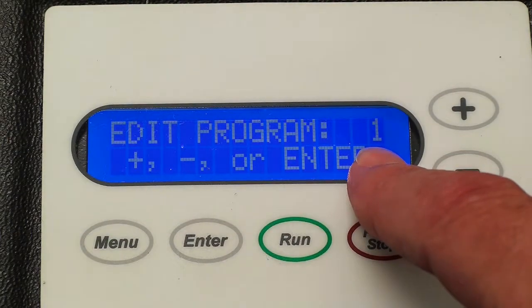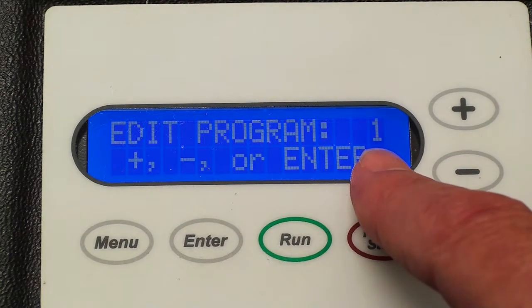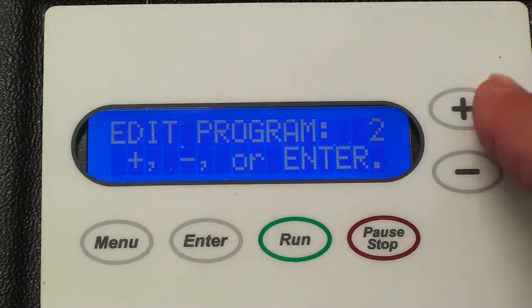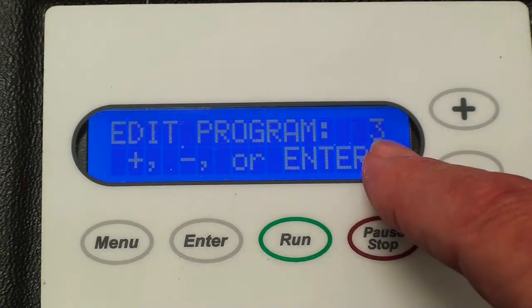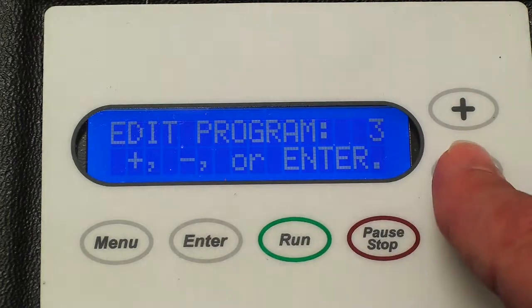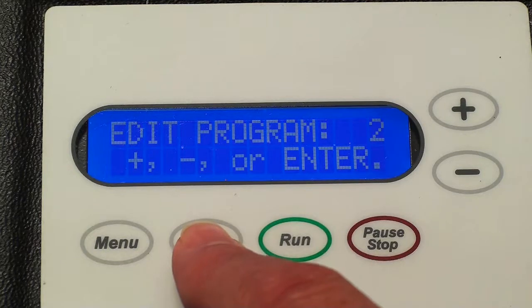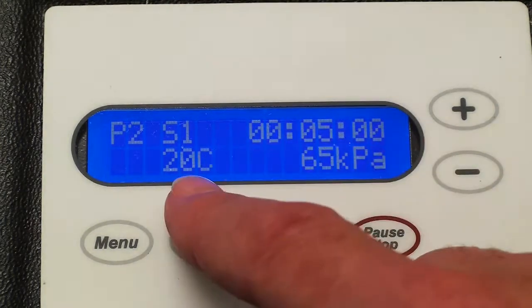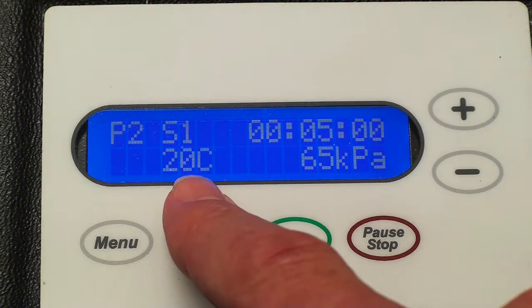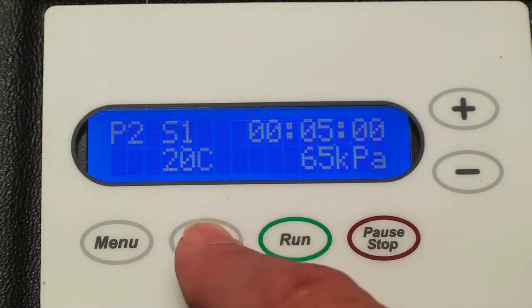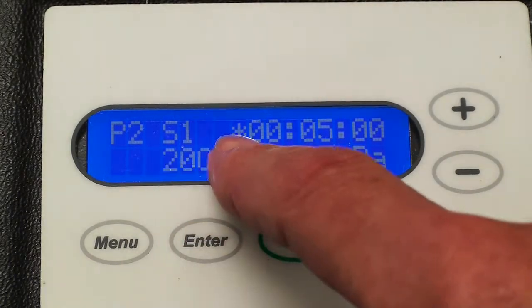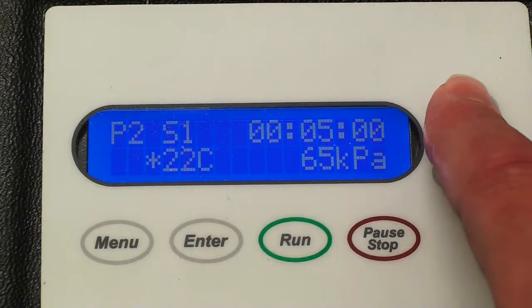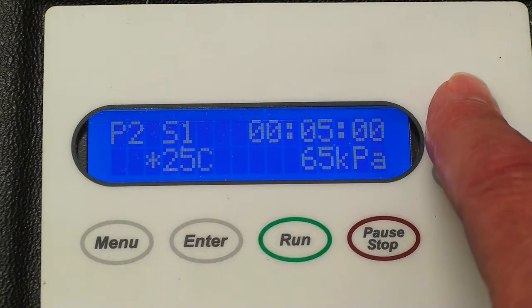It comes with programs number 1 for ethanol. Then number 2 is generally for acetone. And then number 3 is for propylene oxide. I'm going to be doing number 2 even though I'm running acetonitrile, which is more like an alcohol. And it has both a time and temperature that can be changed and also the vacuum. In order to change things, I can push enter and we can see the asterisk there. And I want to go to 25 degrees centigrade.